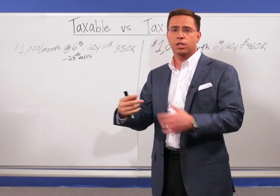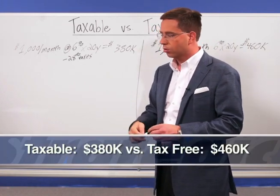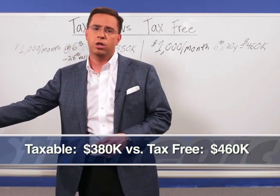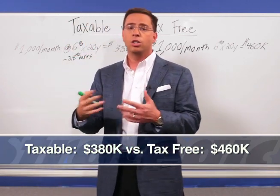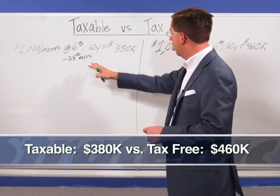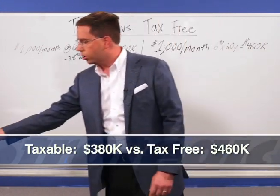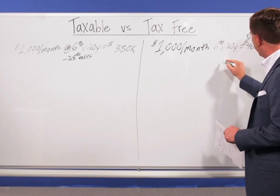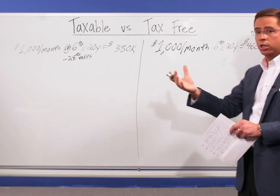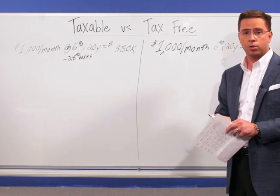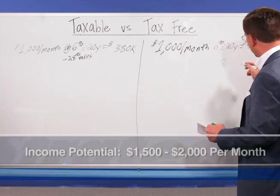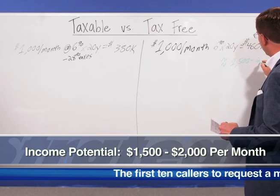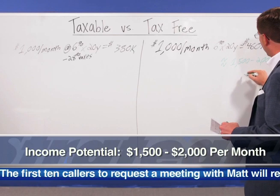So obviously a difference — that's a sizable difference. But the situation goes even further, because it's not so important how large your nest egg is when you retire; you want to look at what type of income you can generate from that retirement account. Starting with our tax-free account — again, it's worth $460,000 — because we're able to take tax-free distributions from it, that's going to give us approximately $1,500 to maybe up to $2,000 per month once we retire.